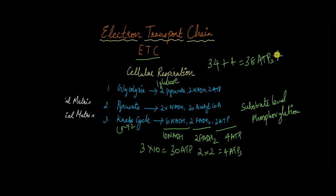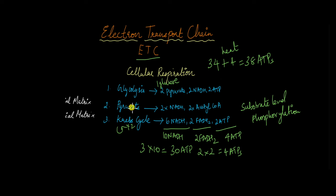However, 38 is just an ideal number — the actual number produced is much less because a lot of energy is dissipated as heat. And with this, we are ending our journey of cellular respiration and ATP production. We started with glycolysis, moved to pyruvate oxidation and Krebs cycle, then to the electron transport chain, which with the help of chemiosmosis and oxidative phosphorylation produced the maximum number of ATP.